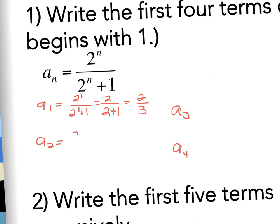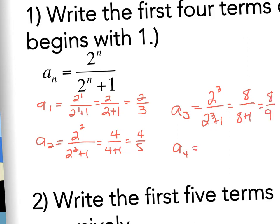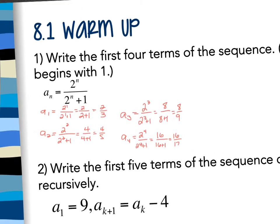Then everywhere there's an n put a 2. So 2 to the 2nd over 2 to the 2nd plus 1, 4 over 4 plus 1 which is 4 fifths. A sub 3 would be 2 to the 3rd over 2 to the 3rd plus 1, which is 8 over 8 plus 1 or 8 ninths. And a sub 4: 2 to the 4th over 2 to the 4th plus 1, which would be 16 over 16 plus 1, which is 16 seventeenths.